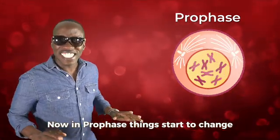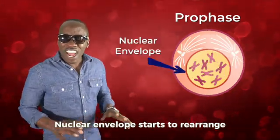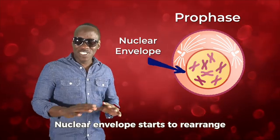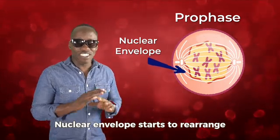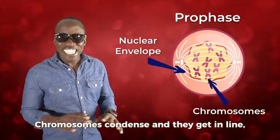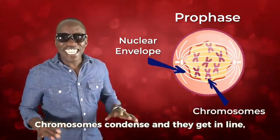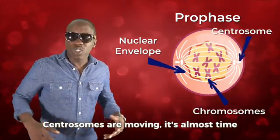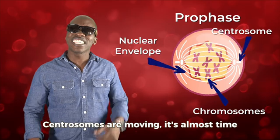Now in prophase, things start to change — the nuclear envelope starts to rearrange. Chromosomes condense and they get in line, centrosomes are moving, it's almost time.